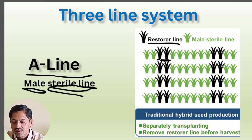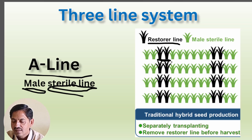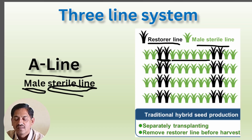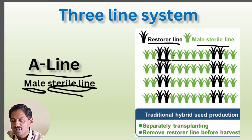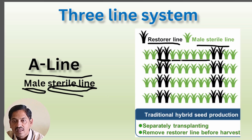The R line is shown here in the field layout. Two rows of R line and six rows of male sterile A line are shown here. The R line will transfer pollen to the female A line.